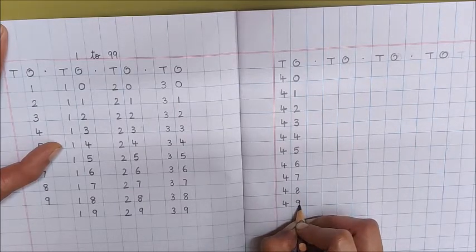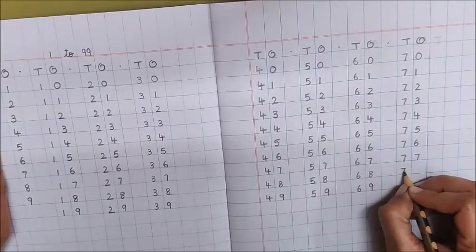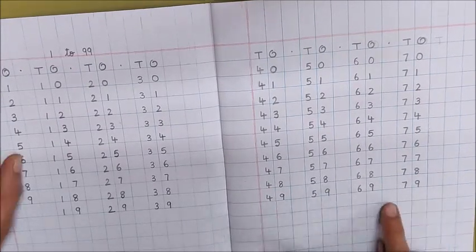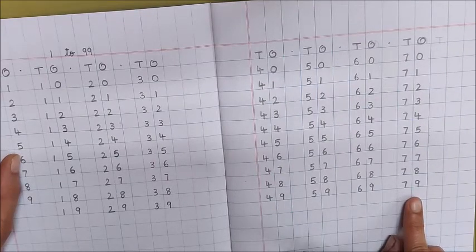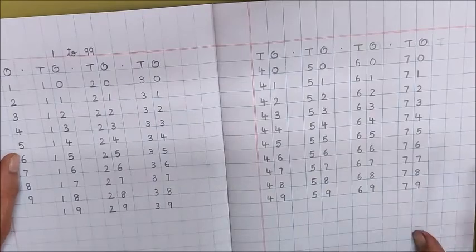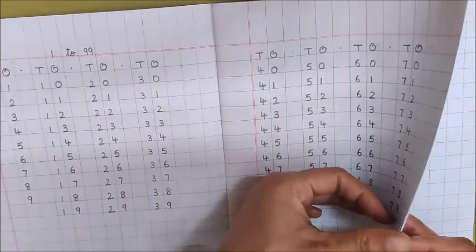Say and write like this. 78, 79. I have written 79 on this page but we have to write counting till 99. So turn the page.